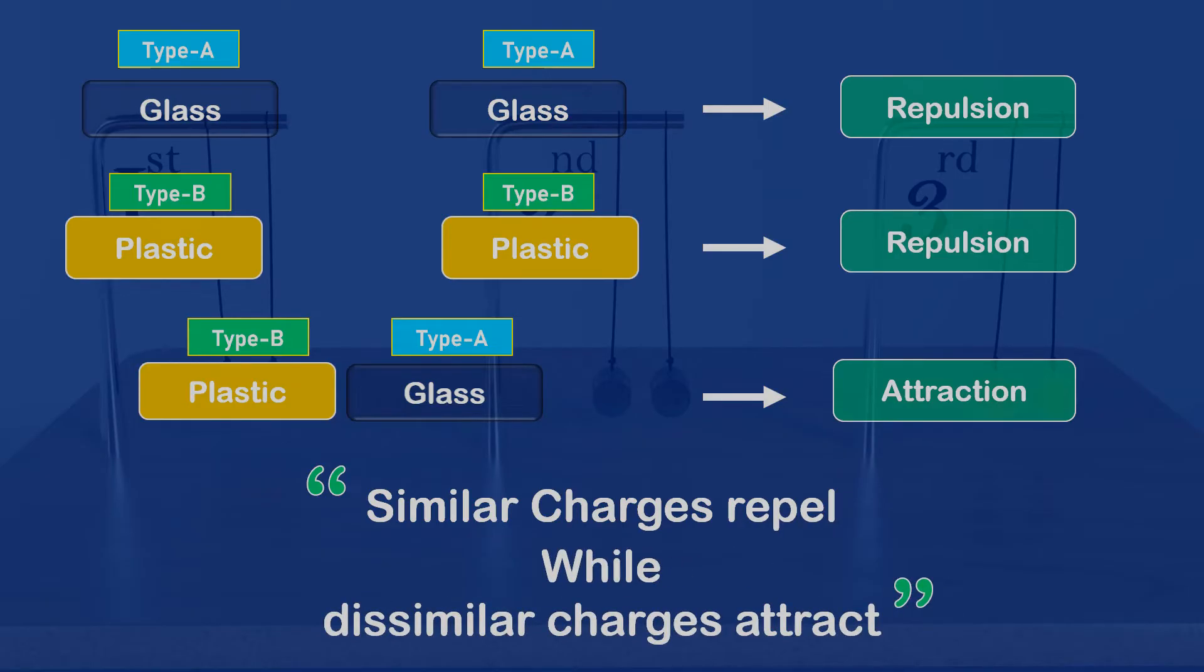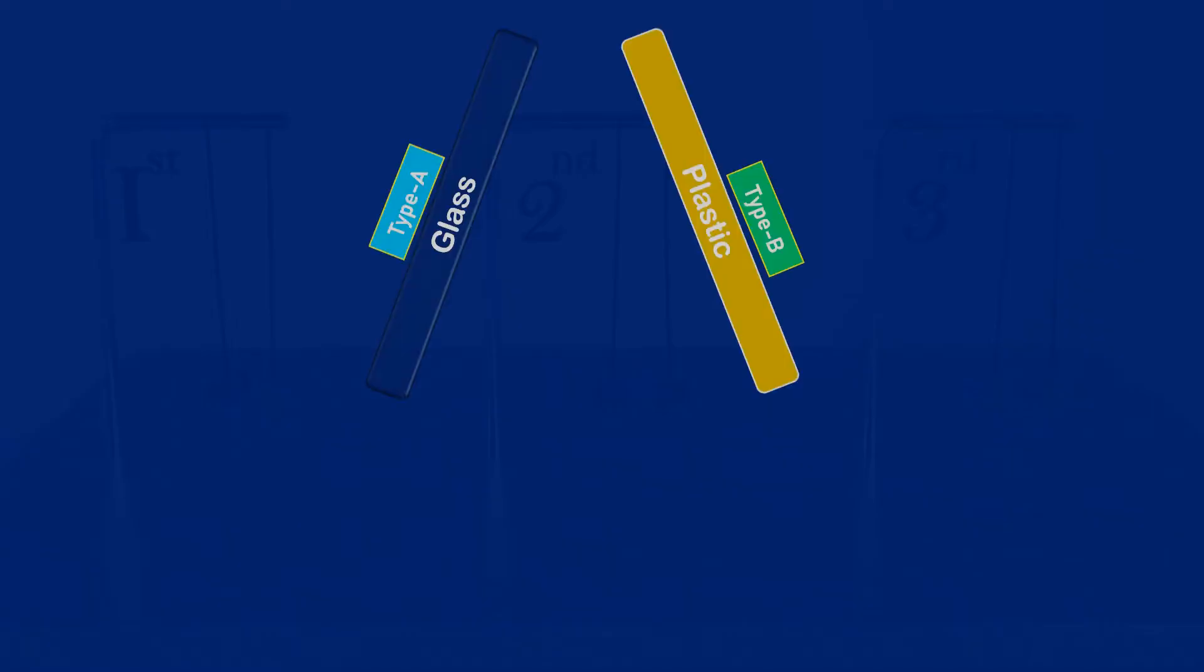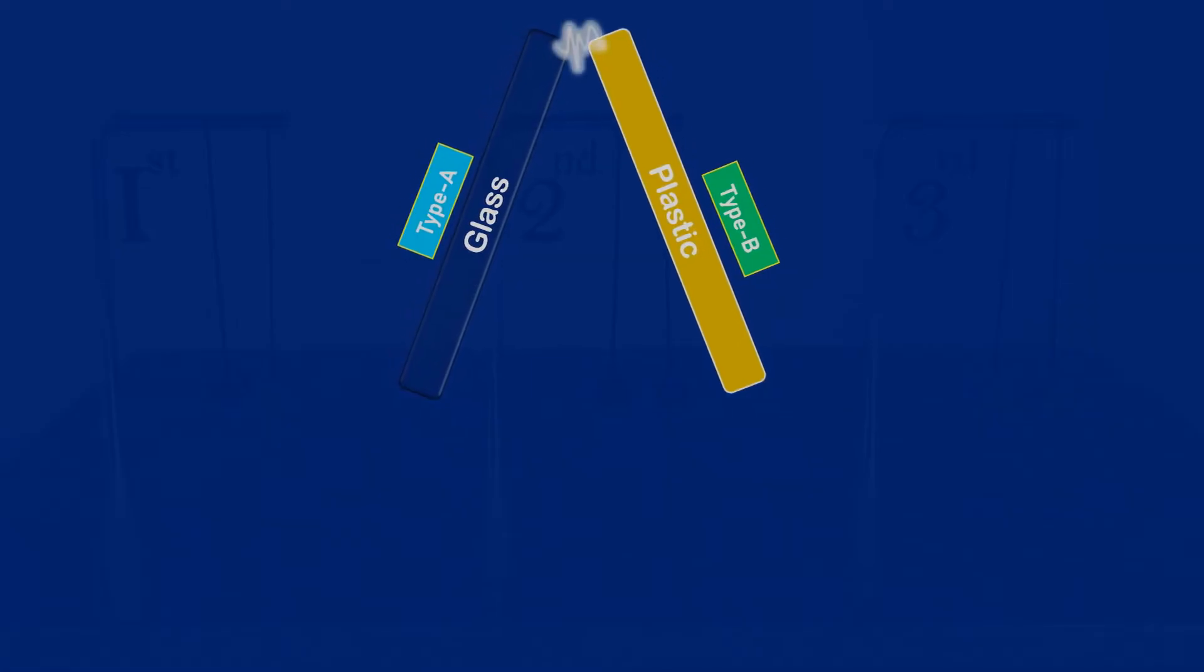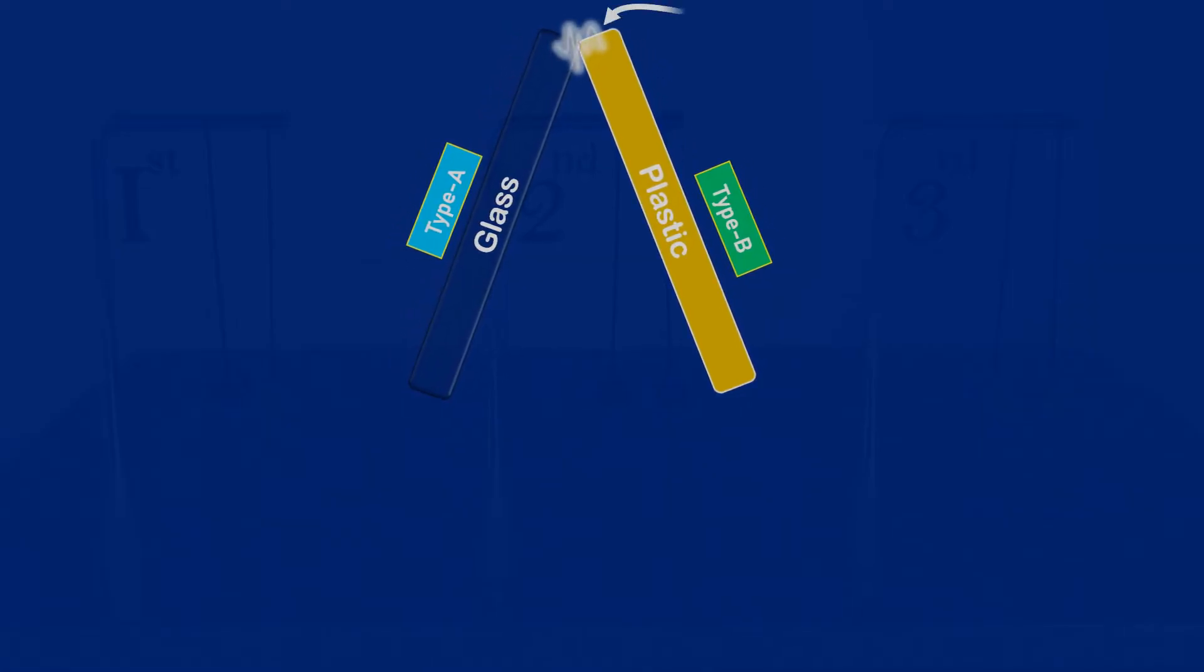So let us now know how the names of these two types of charges were decided. It was observed that whenever we bring two dissimilar charged bodies close to each other, a spark is produced with a glow. In Greek, such glow is called Electra. Because of this, the charge is called an electric charge.